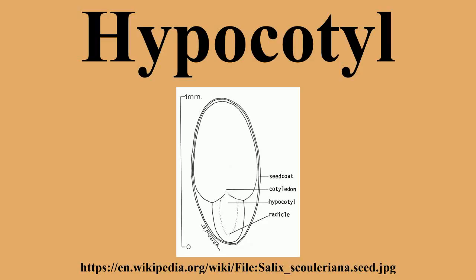The onion develops in a manner similar to the first sequence described above. The seed coat and endosperm are pulled upwards as the cotyledon extends. Later, the first true leaf grows from the node between the radical and the sheath-like cotyledon, breaking through the cotyledon to grow past it.